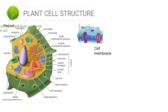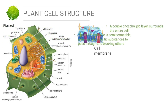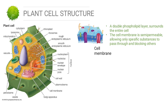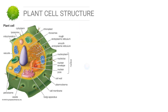The next structure is the cell membrane. The cell membrane is a double phospholipid layer surrounding the entire cell. The cell membrane is semi-permeable, allowing only specific substances to pass through and blocking others.